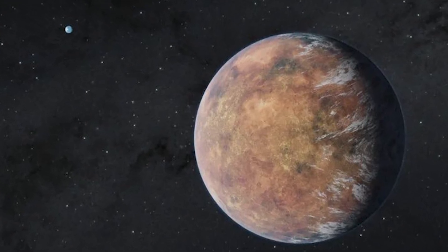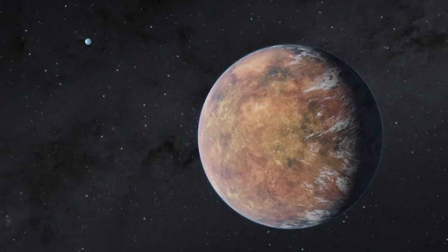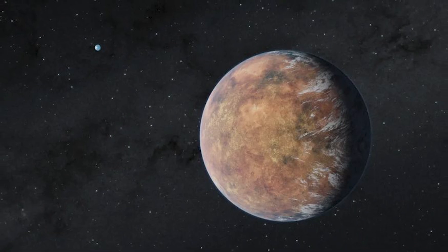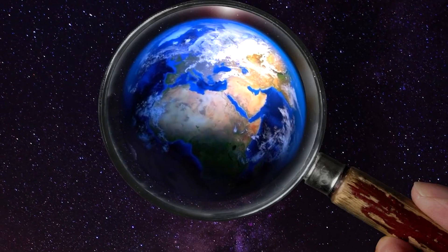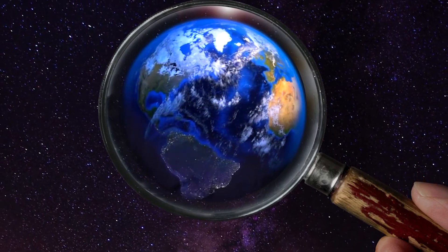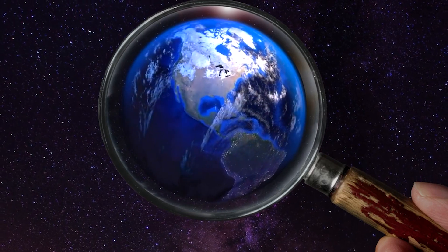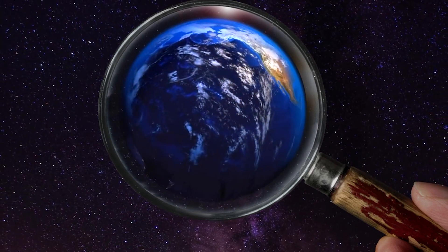The authors of a new study believe that continents appeared on at least two planets in the Milky Way 5 billion years earlier than on Earth. Scientists also believe that such planets, where continents were formed so long ago, may have more advanced life than on Earth. The results of the study were published in Research Notes of the American Astronomical Society.